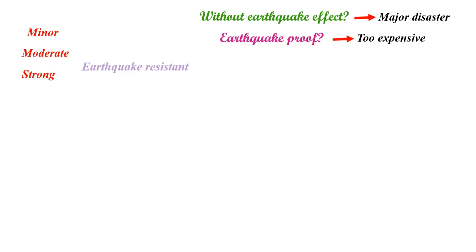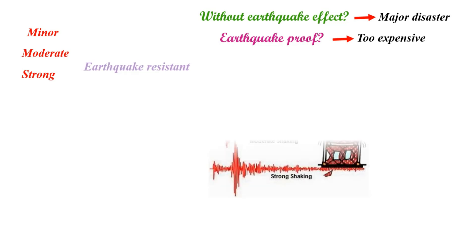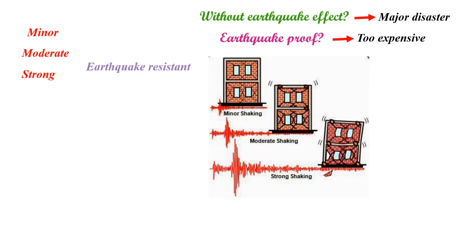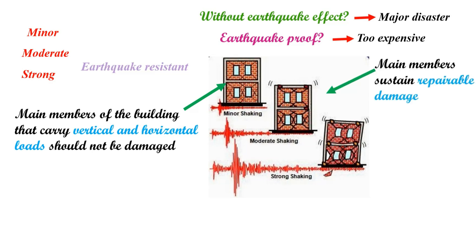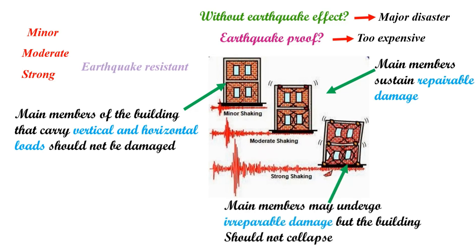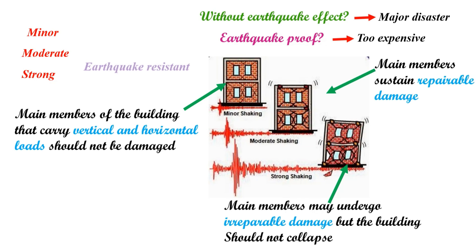So we have to design the building as an earthquake-resistant building — that is the main objective. In minor shaking, the main structural members that carry vertical and horizontal loads should not be damaged. In moderate shaking, the main members sustain repairable damages. In strong shaking, the main members may undergo irreparable damages, but the building should not collapse. This is the major design philosophy of earthquake design.